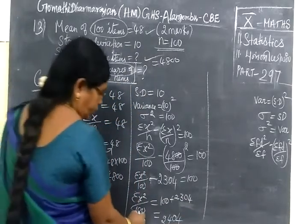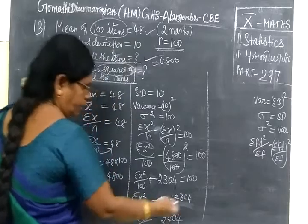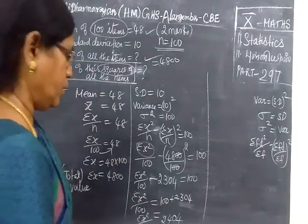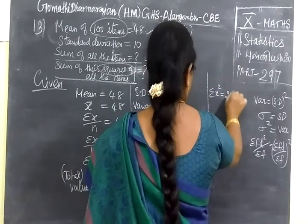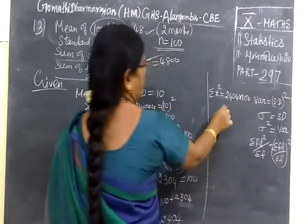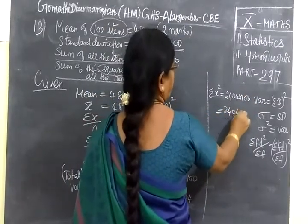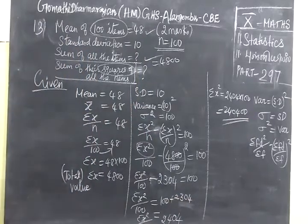So this is sigma X square by 100. 100 you can take to the other side. So sigma X square equal to 2404 into 100, 240400. This is the answer.